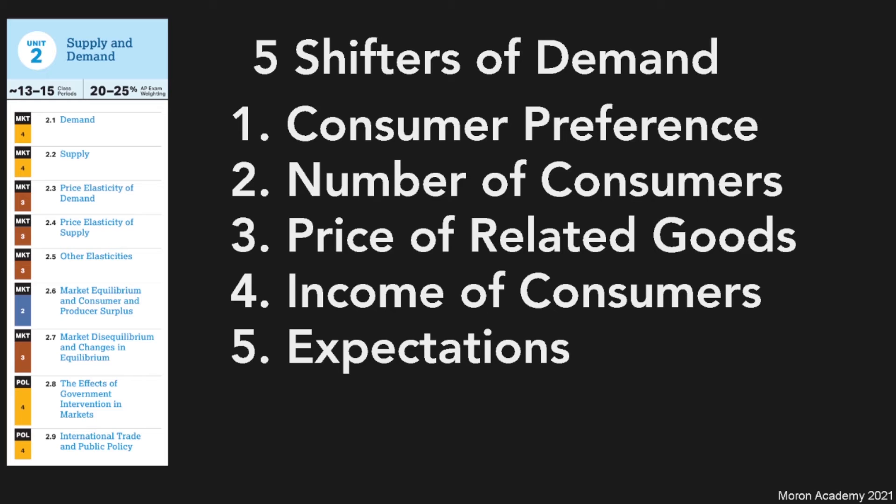For four, which is the income of consumers, I don't want to go too deep into it, but basically know that normal goods, when the income increases, the demand of normal goods increases as well. But for inferior goods, the opposite is true. When the income decreases, the demand increases. I'll be talking more about that in the 2.5 video, so please go there if you need help with that.